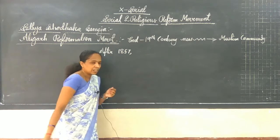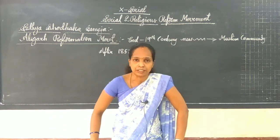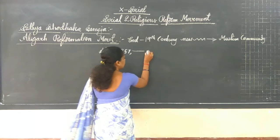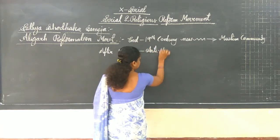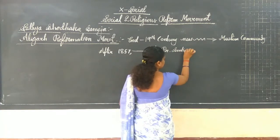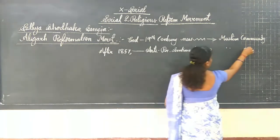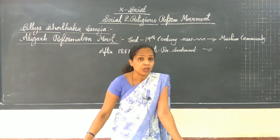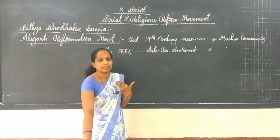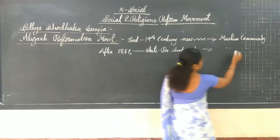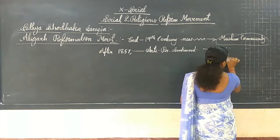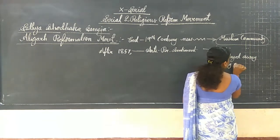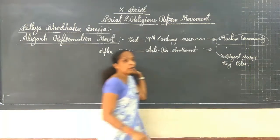After the 1857 incident, anti-British sentiment was growing in the mind of the Muslim community. They were opposing the British rule. Anti-British sentiment was strong in the Muslim community. And even as a result of this, this community stayed away from English education.